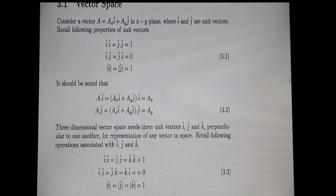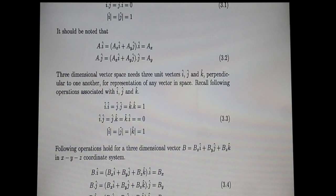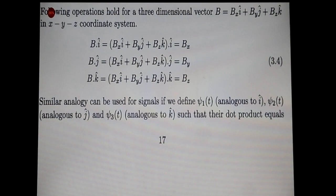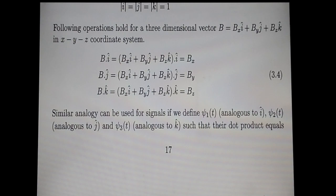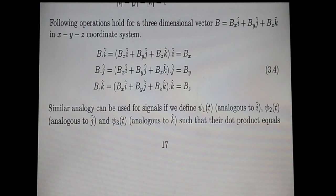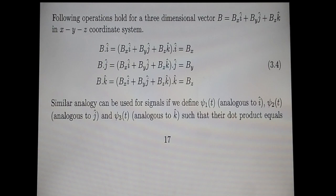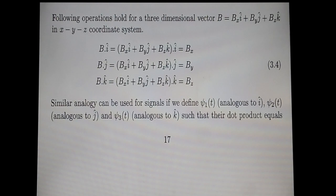In the three-dimensional vector space — the xyz plane — we have three unit vectors. The vector B in three-dimensional space has three components: B = B_x·i + B_y·j + B_z·k. So vector B has components along the i, j, and k directions, meaning it has an image along the x-axis, y-axis, and z-axis respectively.